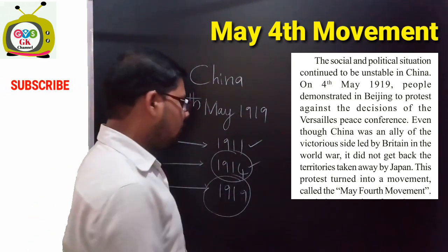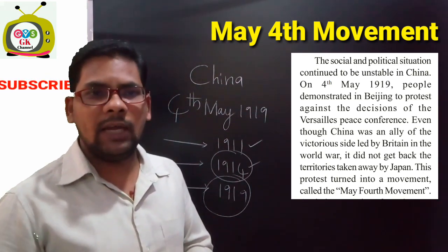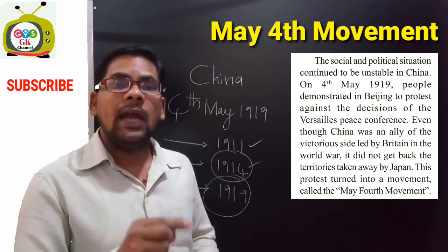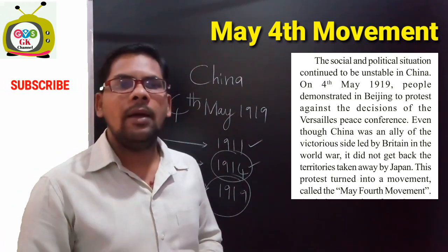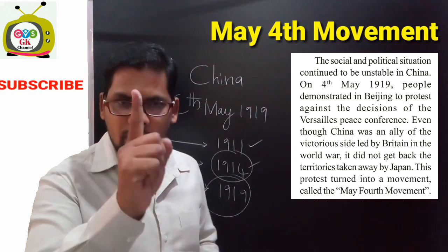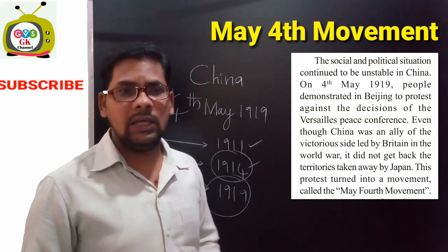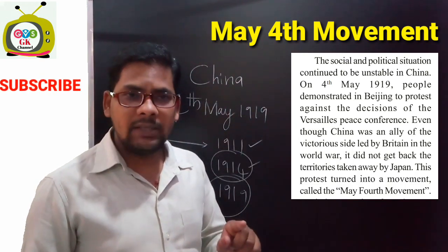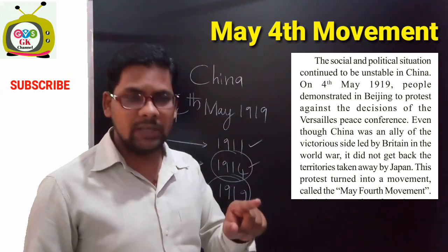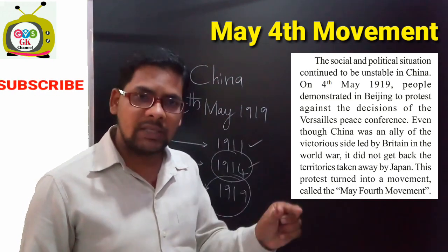For this peace meeting — the Versailles Treaty conference — China was not invited, even though it was an ally of Britain, meaning it was on the victorious side. This was the first reason to start the May 4th Movement: China was excluded from the Versailles Treaty conference despite being a victor.